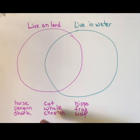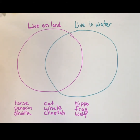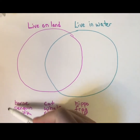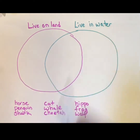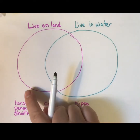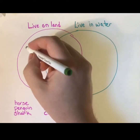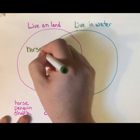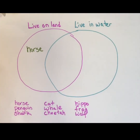I've got a list down here: horse, penguin, shark, cat, whale, cheetah, hippo, frog, and wolf. What I want to do is put these animals into the correct category — that's what we do with Venn diagrams. So let's start with horse. Does the horse live on land or in water? Well, it lives on the land, so it needs to go into my land circle. I'm going to put my horse in my land circle and give myself a little check mark.